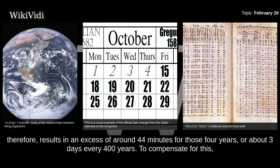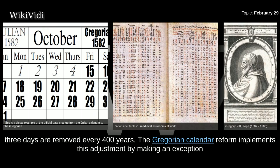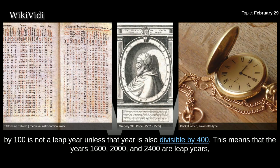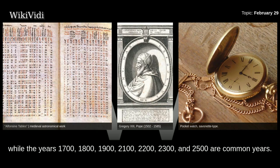To compensate for this, 3 days are removed every 400 years. The Gregorian calendar reform implements this adjustment by making an exception to the general rule that there is a leap year every 4 years. Instead, a year divisible by 100 is not a leap year unless that year is also divisible by 400. This means that the years 1600, 2000, and 2400 are leap years, while the years 1700, 1800, 1900, 2100, 2200, 2300, and 2500 are common years.